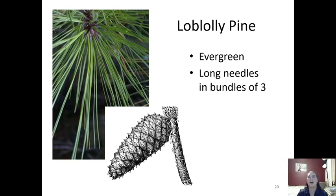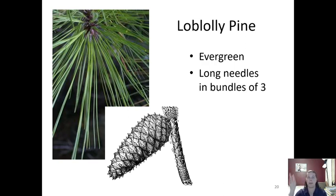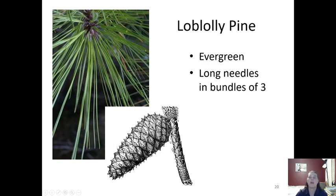Next is another evergreen: loblolly pine. Loblolly pine is pretty common — you've probably seen it all over the place. They have long needles in bundles of three, so each needle group has three needles coming off it, and those needles are quite long. The cones are also pretty long compared with Virginia pine.